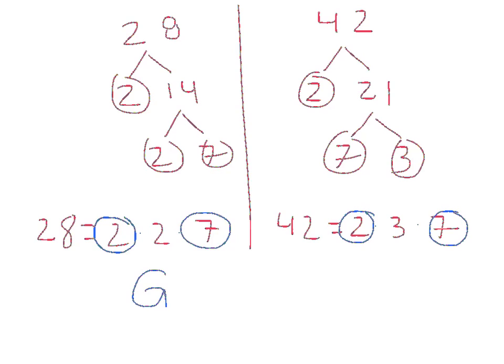Thus, my greatest common factor is equal to my 2 times 7, or 14.